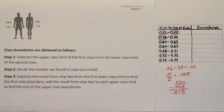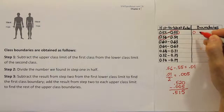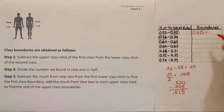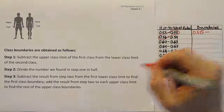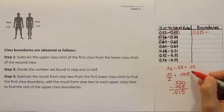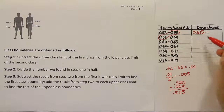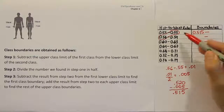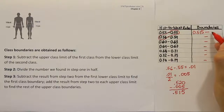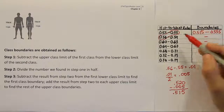So .515 is the result for the first class boundary. That value goes on the lower boundary side. Now to get the upper class boundaries, we add this .005 to each of the upper class limits. So if we take .55 and add .005, we get 0.555. Then we repeat down the line.